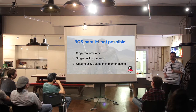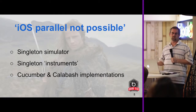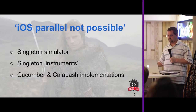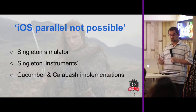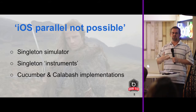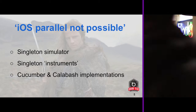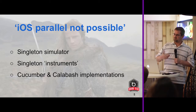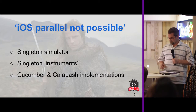The common internet wisdom is that you can't do it. The simulator is a singleton — you can't run more than one simulator at a time. The instruments command, which is how you talk to it, is also a singleton. You can't talk to more than one of these things at the same time. Cucumber is a singleton, or at least it assumes it's only running one set of tests at a time. And Calabash makes all sorts of assumptions that there is only one simulator running.